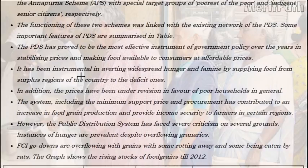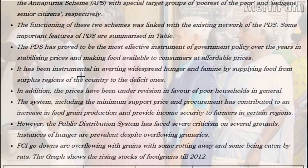Looking at the positive features of the public distribution system: PDS has helped keep food prices stable by providing food at subsidized rates. It has prevented large-scale hunger by supplying food from surplus regions to deficit ones. Efforts have been made to extend PDS benefits to the poorest of the poor. Procurement of food grains at attractive minimum support prices has provided assured income to farmers and boosted food grain production, while FCI's procurement to create a buffer stock is an essential requirement for the PDS.